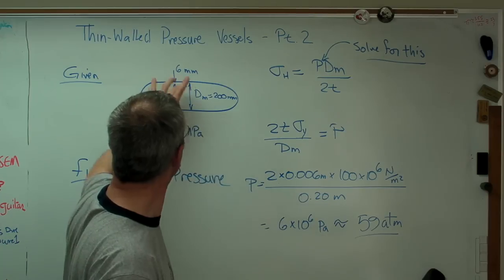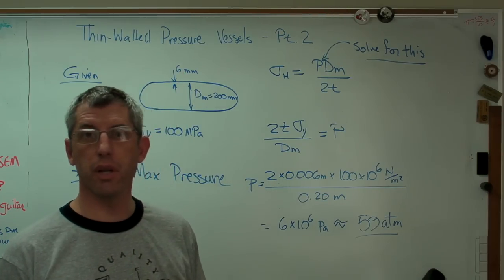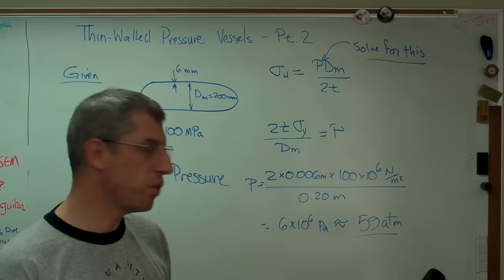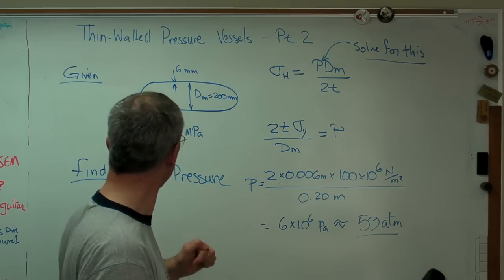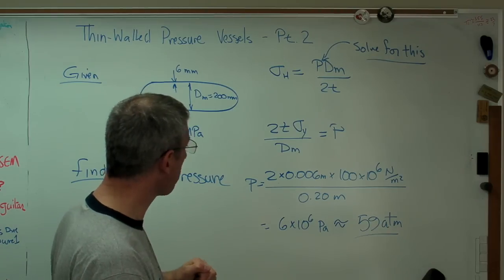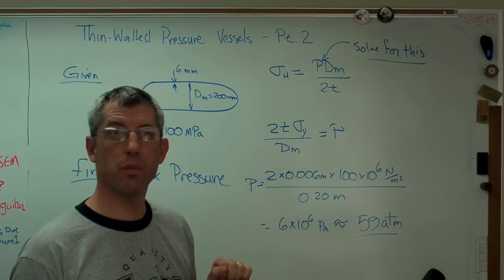Well, if you divide 200 millimeters by 6 millimeters, you get a number that's a lot more than 20. I think it's 33 and a third, but check me on that. So this definitely counts as a thin wall pressure vessel.